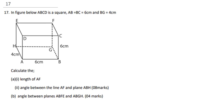Question 17 says: in figure ABCD is a square where AB is equal to BC which is equal to 6cm and BG is equal to 4cm. Calculate (A) the length of AF. In order to find AF, you need to identify line AF on the diagram.